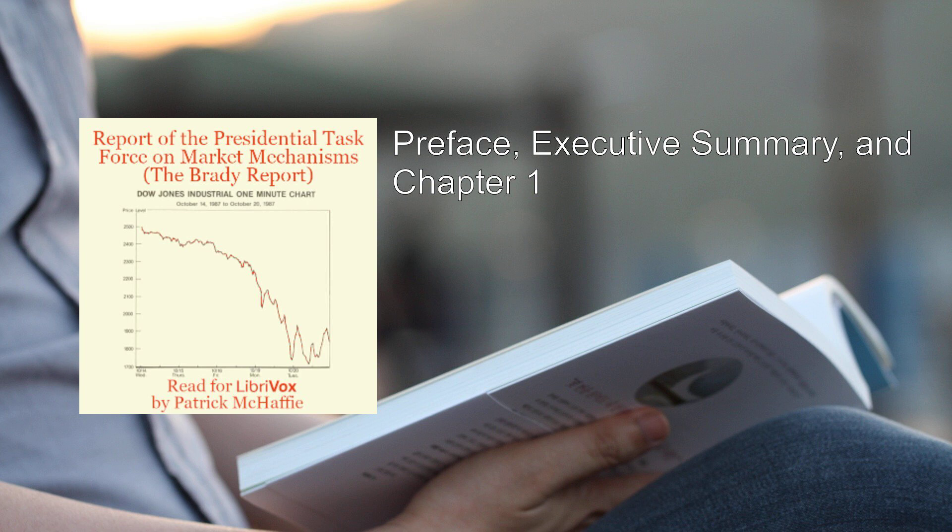Portfolio insurers and other institutions sold in both the stock market and the stock index futures market. Selling pressure in the futures market was transmitted to the stock market by the mechanism of index arbitrage. Throughout the period of the decline, trading volume and price volatility increased dramatically. This trading activity was concentrated in the hands of a surprisingly few institutions. On October 19th, sell programs by three portfolio insurers accounted for just under $2 billion in the stock market. In the futures market, three portfolio insurers accounted for the equivalent in value of $2.8 billion of stock.